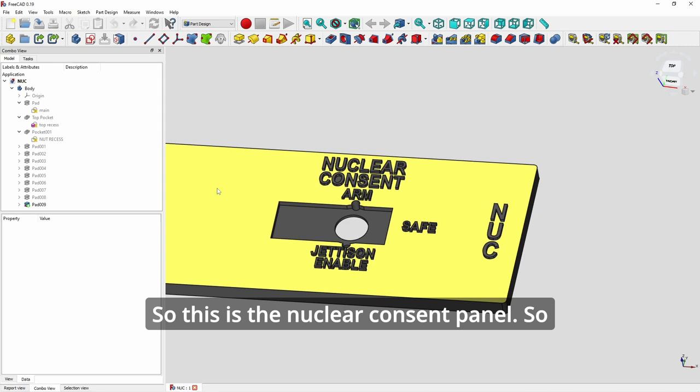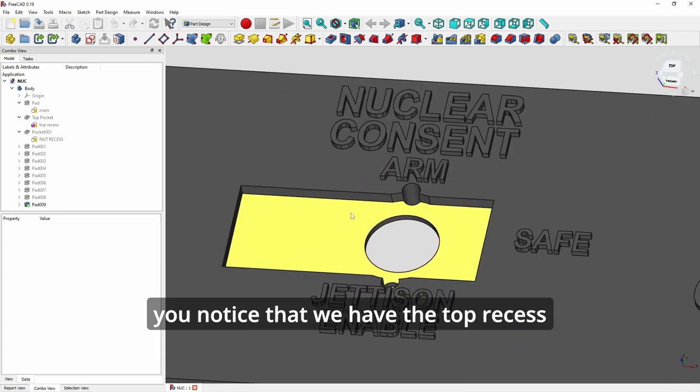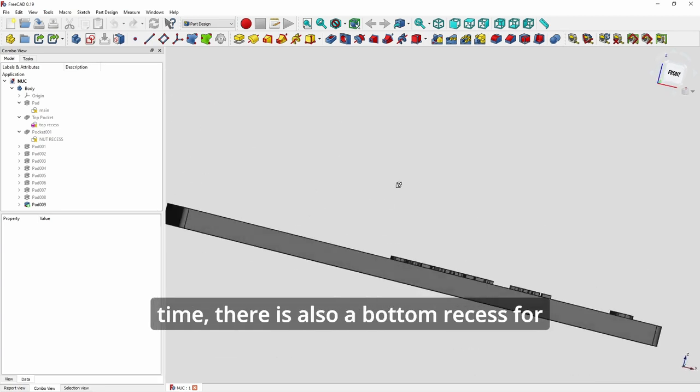So this is the nuclear consent panel. So you notice that we have the top recess for the toggle guard. But at the same time, there is also a bottom recess for the washer.